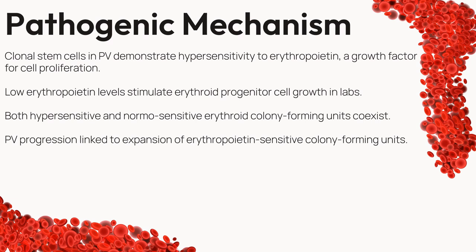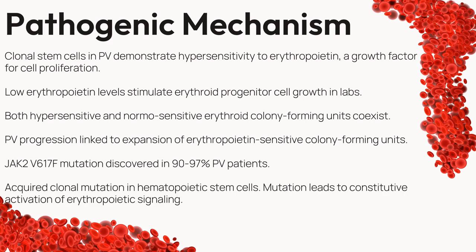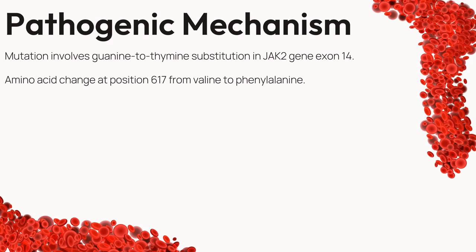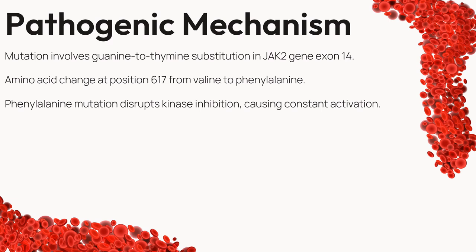The tale takes a significant turn with the discovery of the JAK2V617F mutation, found in 90–97% of PV patients. This is an acquired alteration that occurs within hematopoietic stem cells, leading to the constitutive activation of erythropoietic signaling. The mutation involves a change from guanine to thymine in JAK2 gene's exon-14, resulting in an amino acid change at position 617 from valine to phenylalanine, which disrupts normal inhibition of kinase activity, leading to constant activation.